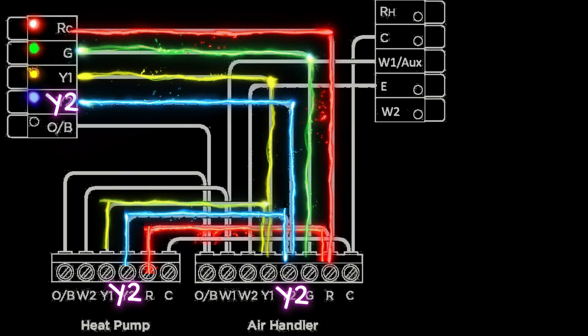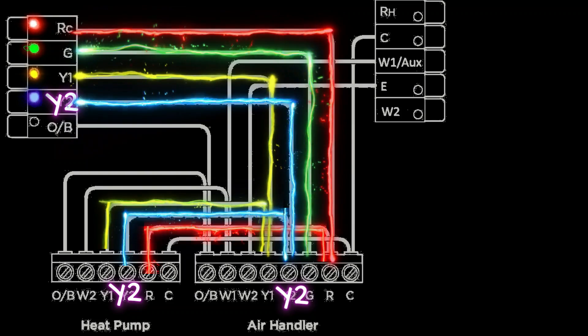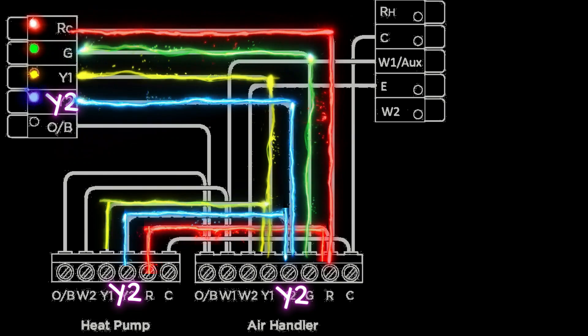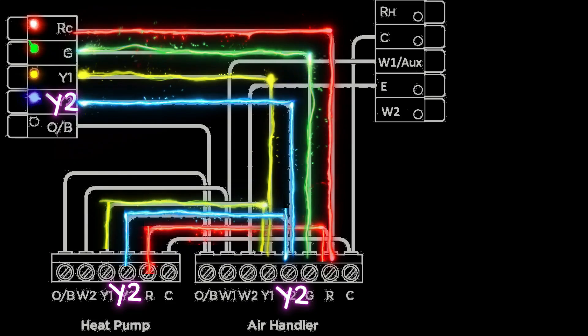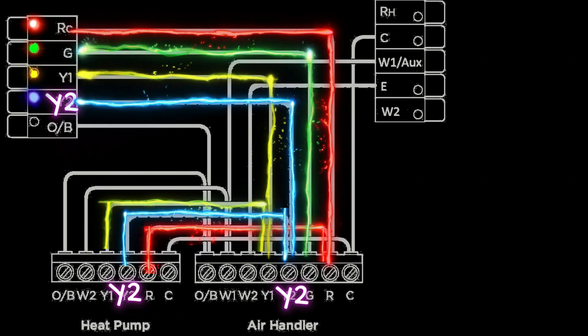Now some units have two compressors, one for each stage. Some units have a single compressor that's staged by itself. So this Y2 signal is going to either initiate a second compressor or initiate a second stage in a single compressor. If you have a variable speed condenser fan motor, this will also initiate a higher speed on that motor.